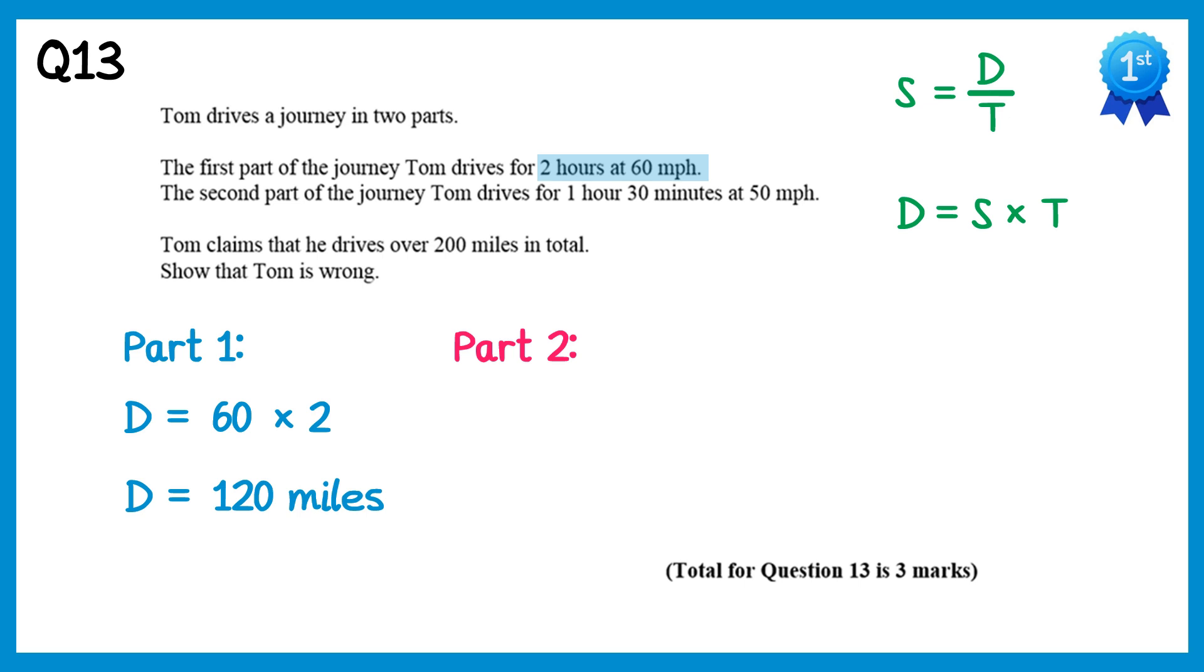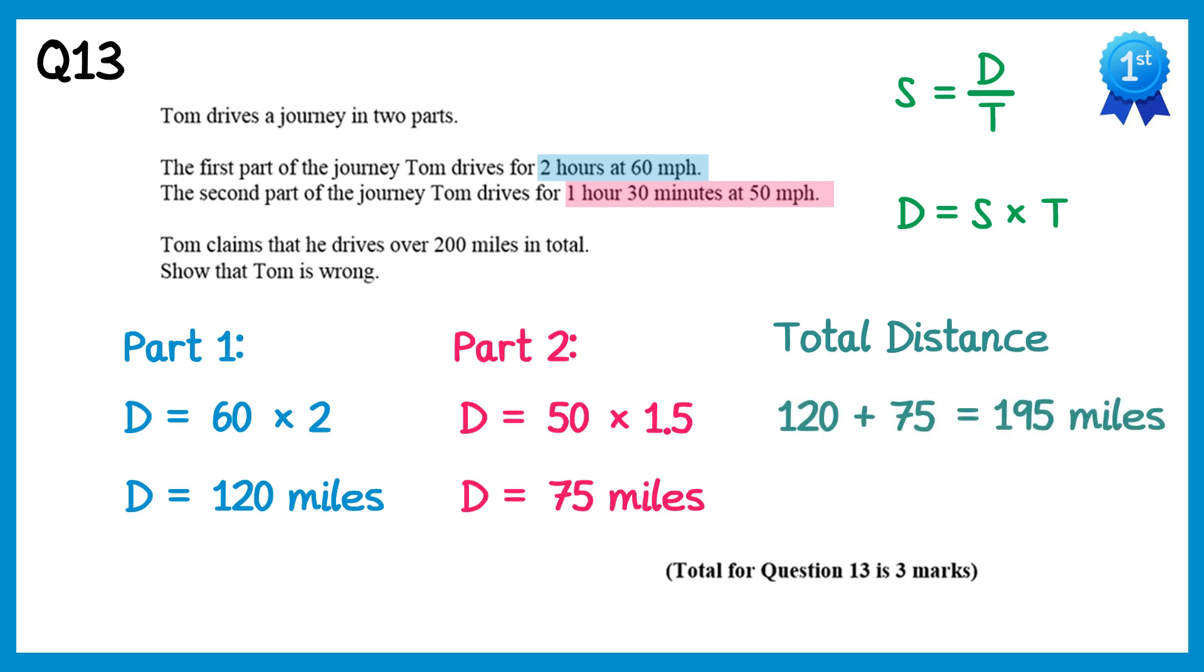For part 2 of the journey, Tom travels for one and a half hours at 50 miles an hour. So the distance is the speed times time, the speed is 50, and the time is 1.5 hours, one and a half hours. If you times these you get 75 miles. So the total distance is 120 add 75, which is 195. In the question we're asked to show Tom is wrong, so 195 is less than 200.